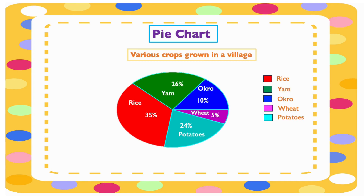Look at this chart and you will see how they are allocated — how many percentage each of the crops is grown. Rice: 35 percent, yam: 25 percent, okra: 10 percent, wheat: 5 percent, and potatoes: 24 percent.